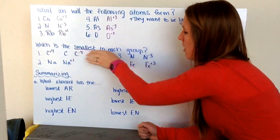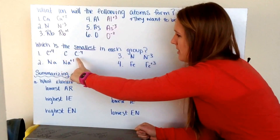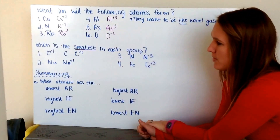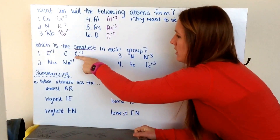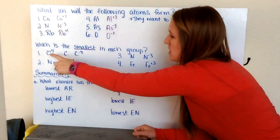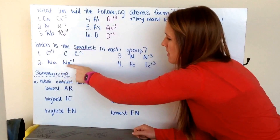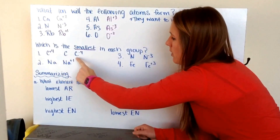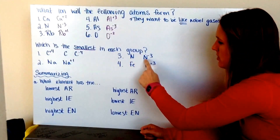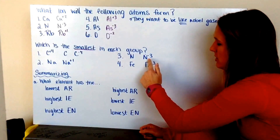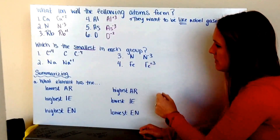Now we want to determine what is the smallest in each group. For carbon plus four, carbon, and carbon minus four: anions are the biggest and cations are the smallest, so carbon minus four is the largest and carbon plus four is the smallest. For sodium and sodium plus one: sodium plus one will be the smallest. For nitrogen and nitrogen minus three: my anion, nitrogen minus three, is the largest, so nitrogen is smaller. For an ion and that ion plus three: my cation is going to be smaller.